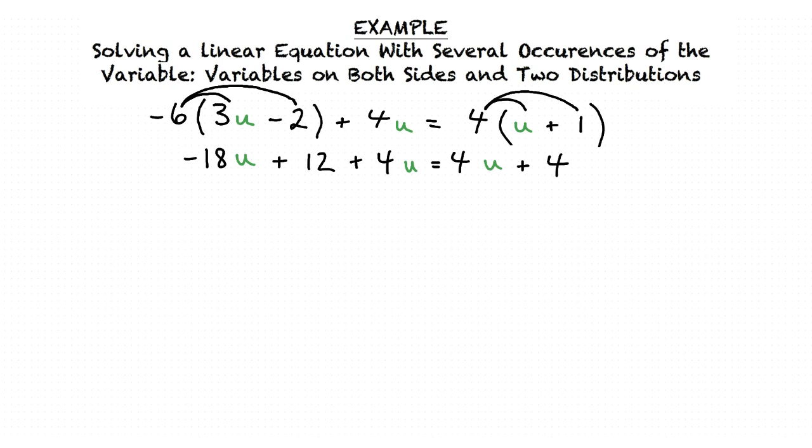Negative 18u and 4u can be combined to give us negative 14u. And now we can fill in the rest of our equation. After combining like terms our new equation is negative 14u plus 12 equals 4u plus 4.